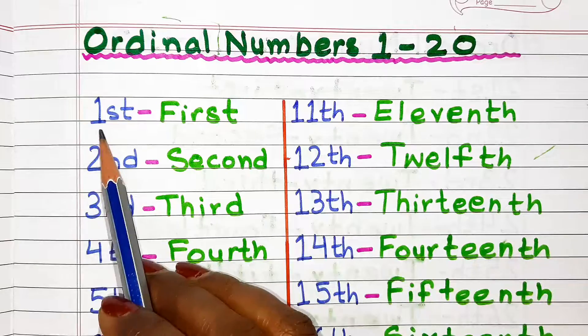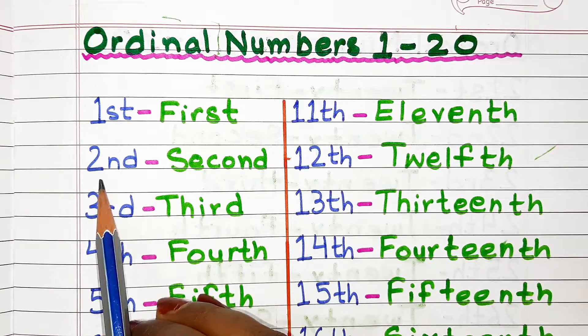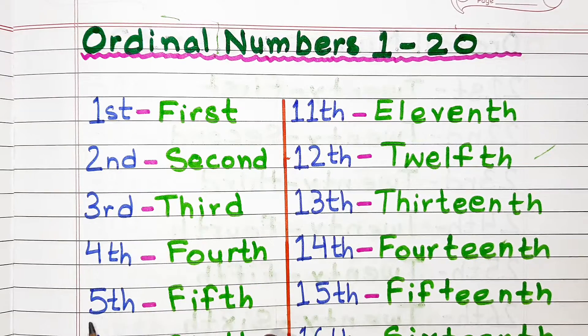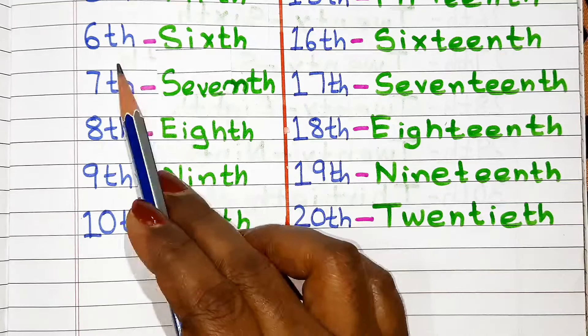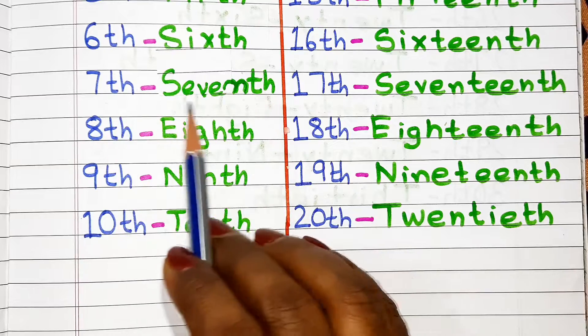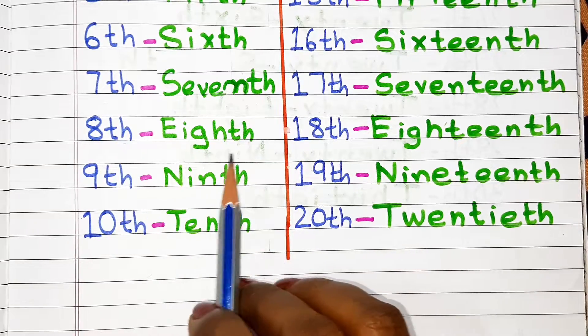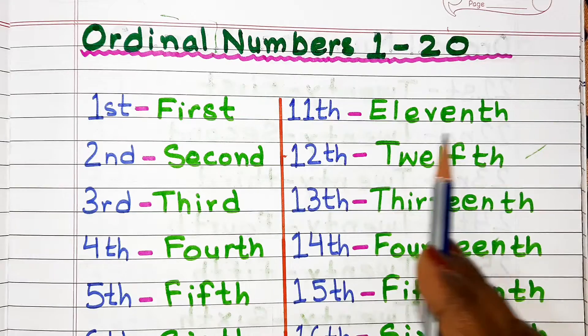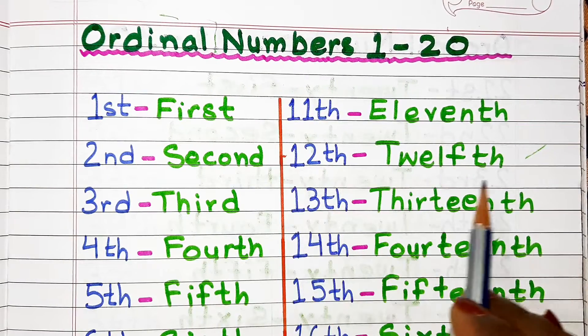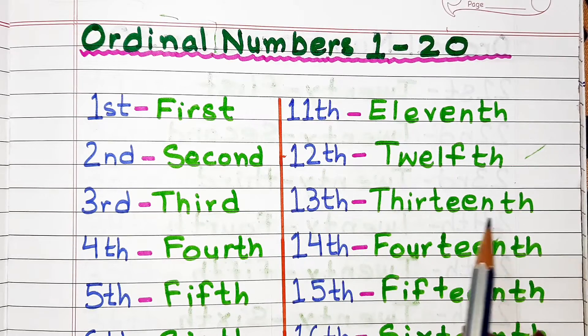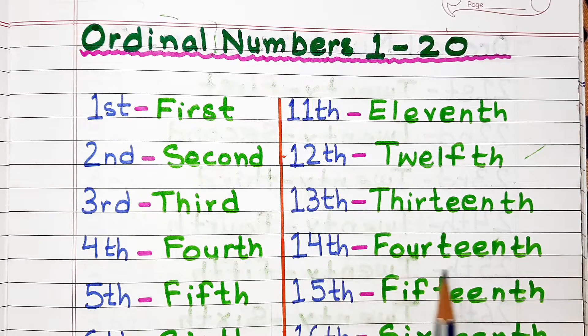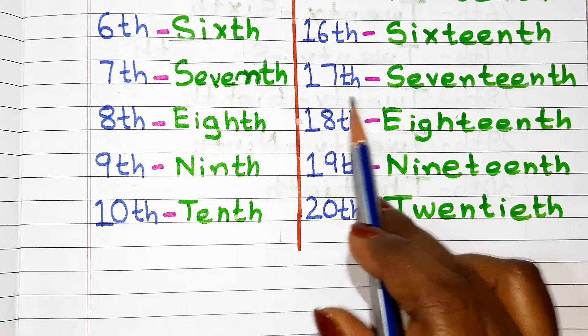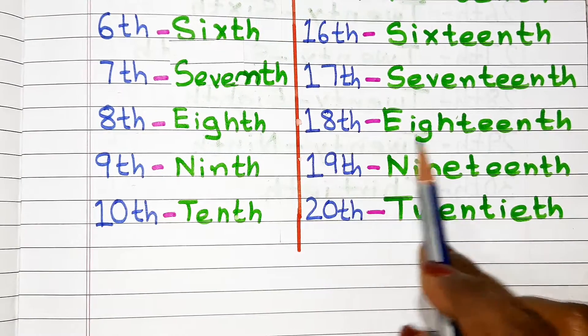First, second, third, fourth, fifth, sixth, seventh, eighth, ninth, tenth, eleventh, twelfth, thirteenth, fourteenth, fifteenth, sixteenth, seventeenth, eighteenth, nineteenth, twentieth.